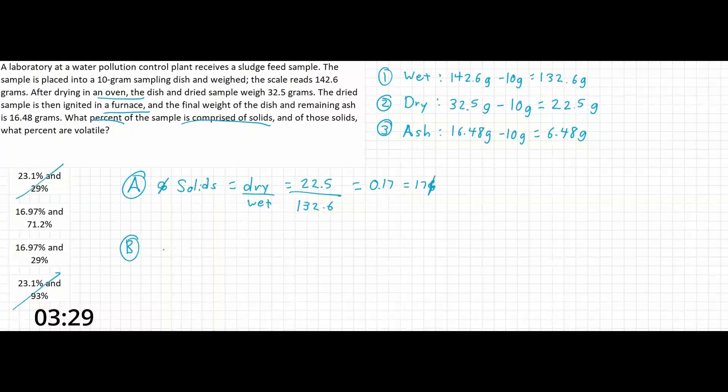Now if we were looking for the percent of volatile, we can calculate this as follows. The volatile sample is going to be the percent that was burned off in the furnace. The non-volatile portion is going to be the part that remained, aka the ash.